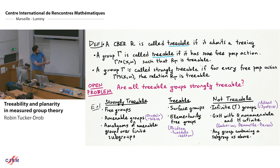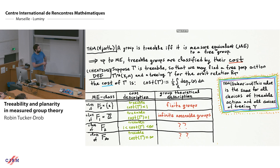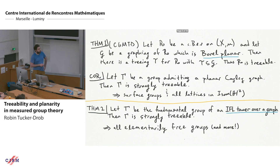Today I'll talk about the surface groups and elementarily free groups that I listed — they were known to be treeable. The reason surface groups are treeable is that they're measure equivalent to free groups: hyperbolic surface groups and free groups are both lattices in the isometry group of the hyperbolic plane, so they're measure equivalent and hence treeable.